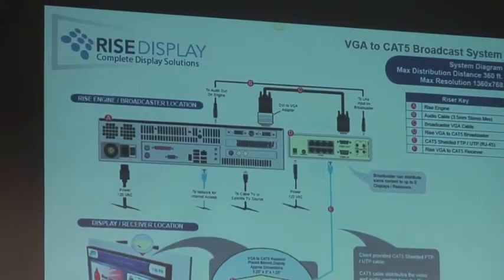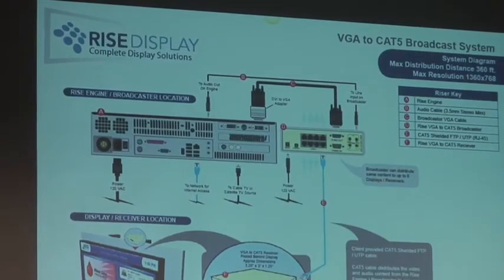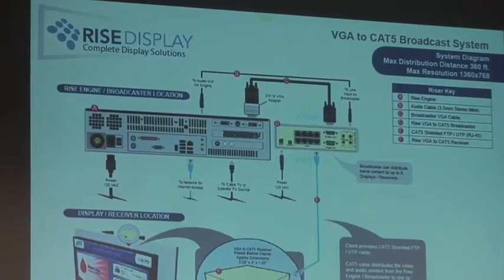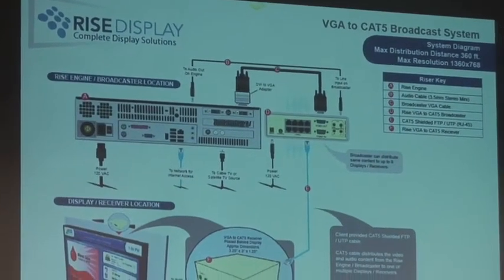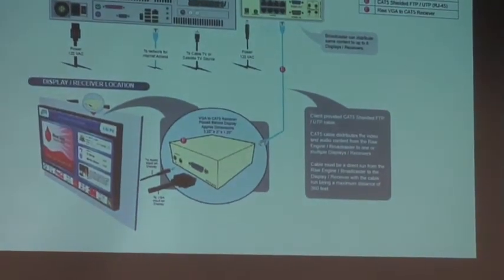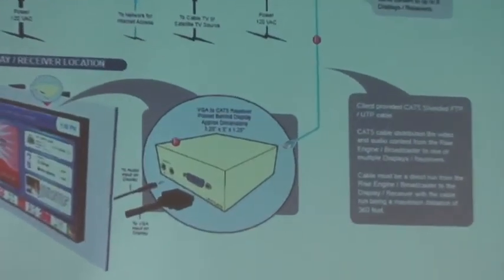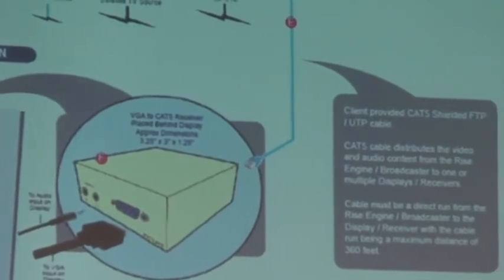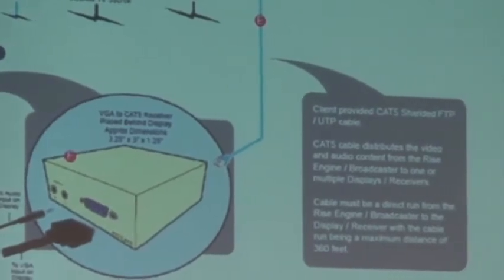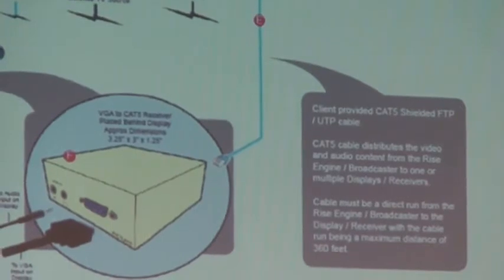Each broadcaster can handle eight outputs. The broadcaster sends the signal, and the receiver at each LCD converts the Ethernet back to a video signal. We have different hardware options to keep splitting that signal to multiple displays within a single building.